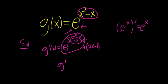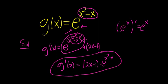The last thing we can do maybe is put the 2x minus 1 in the front. So I'll go ahead and do that. So 2x minus 1 times e to the x squared minus x. And that's it.